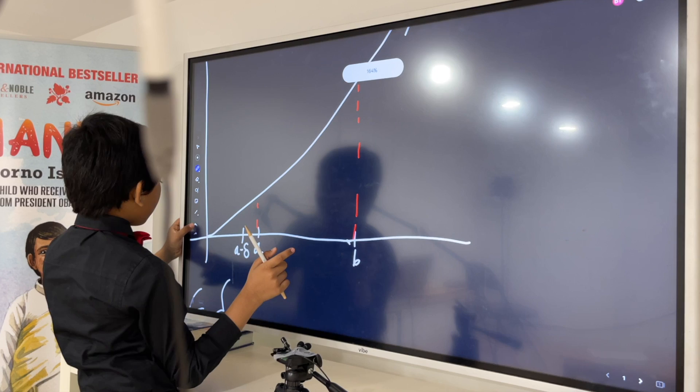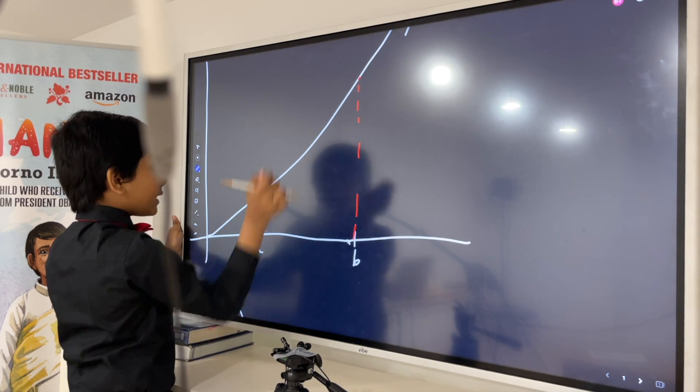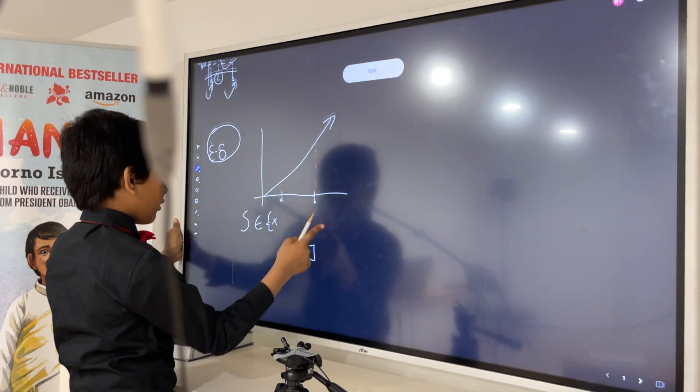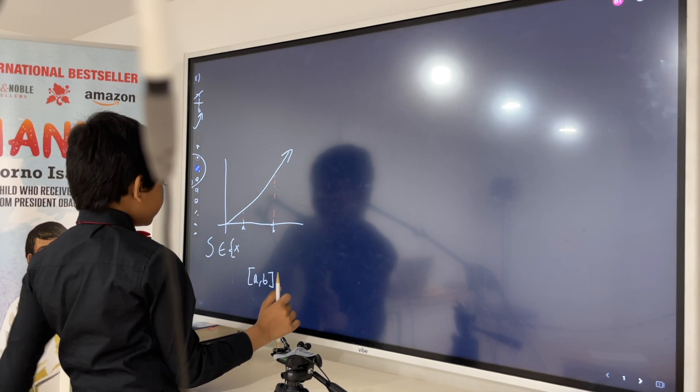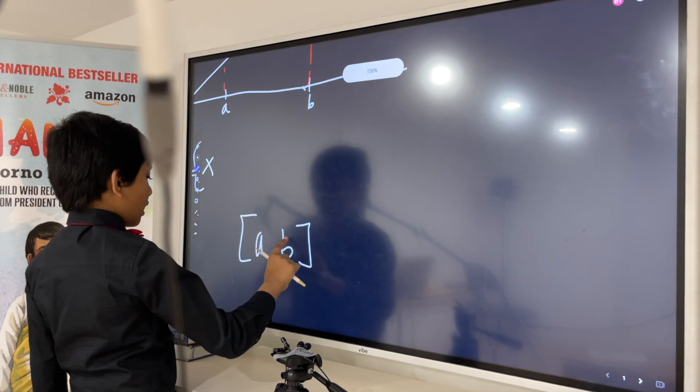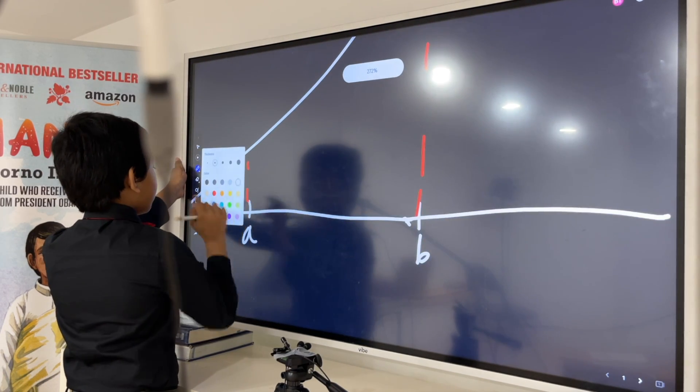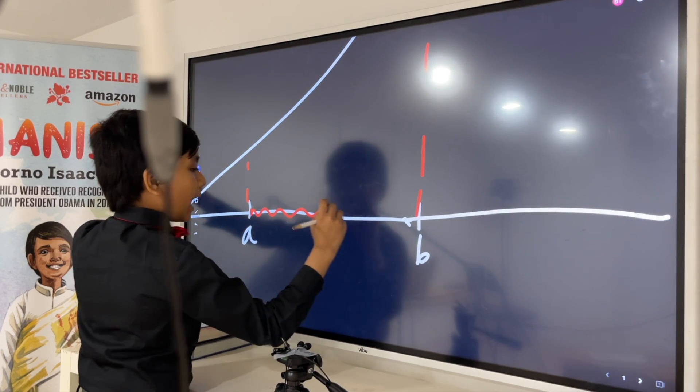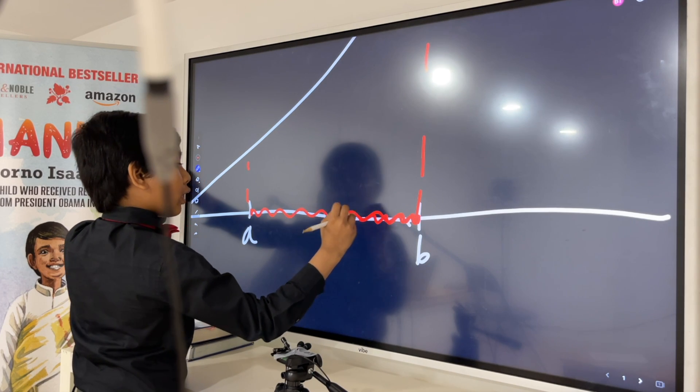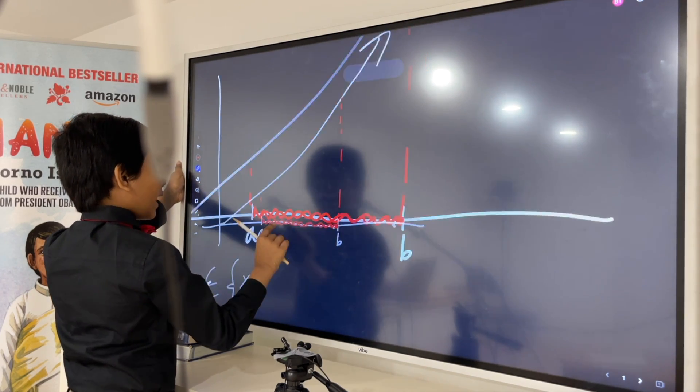So, for now, we really only need to care about this portion in red. So now, x is in the set A comma B. That means x could be anywhere in here, from A to B,